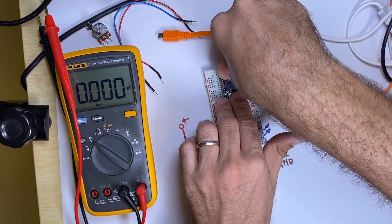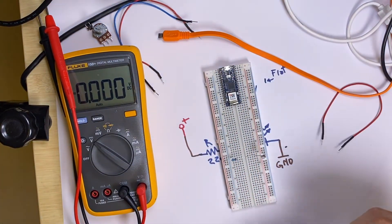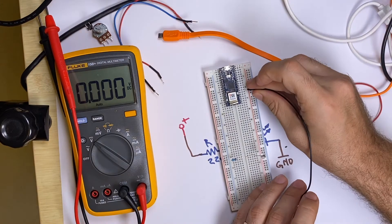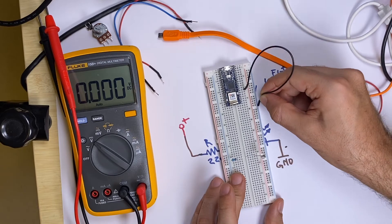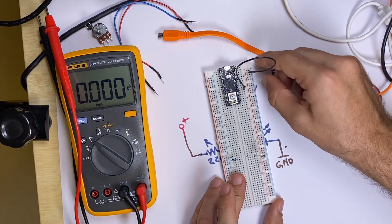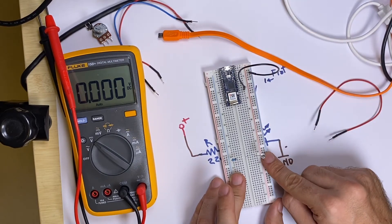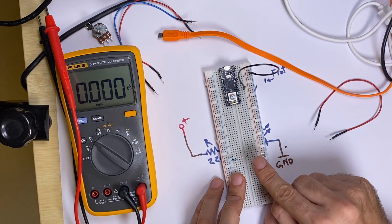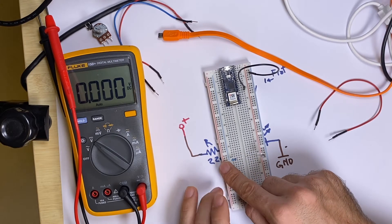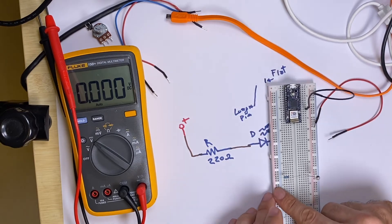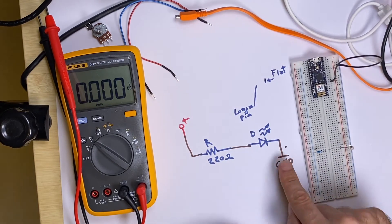Still being careful not to bend the headers. I should connect ground to the pin identified with white color. I can put it anywhere along the rail labeled blue. From there I go to the LED, and the LED to the resistor. The resistor still needs one more connection.